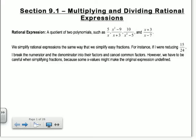Section 9.1 is on multiplying and dividing rational expressions. A rational expression is a quotient of two polynomials, so you could have something like 5 over x, x squared minus 9 over x plus 3, etc. We simplify rational expressions just the same way that we simplify easy fractions. So if you have 15 over 24, think about how you simplify 15 over 24.